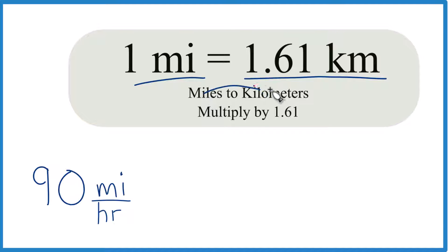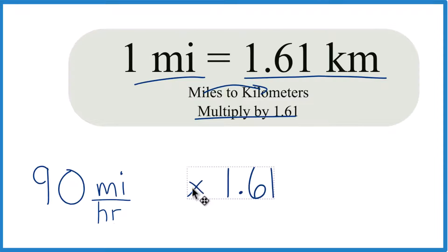So miles to kilometers here, we're going to multiply by 1.61. So 90 miles per hour times 1.61, that'll give you kilometers per hour.